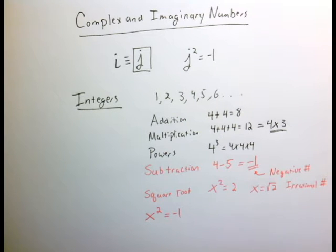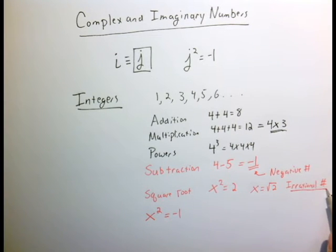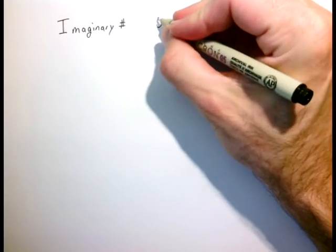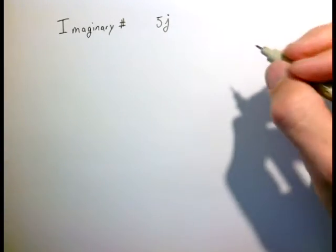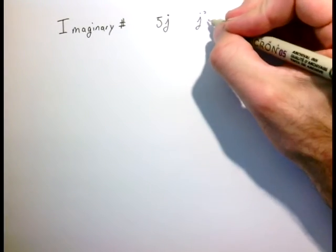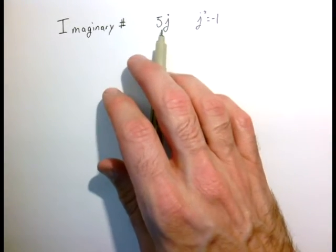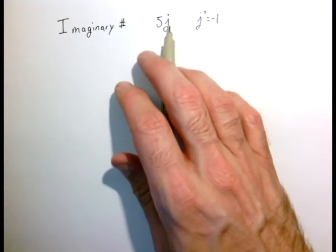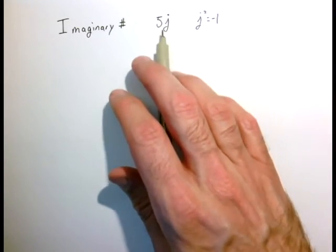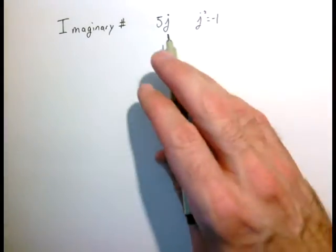The fact that we call the square root of minus 1 an imaginary number makes it sound made up, but it's no more made up than things you're familiar with, like irrational numbers, negative numbers, or even zero. An imaginary number is one where we have some factor times j — like 5 times j. So j squared equals minus 1, or j is the square root of minus 1.